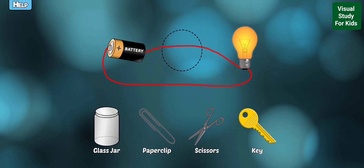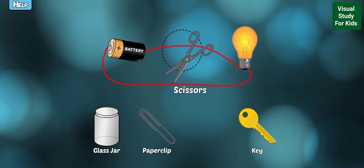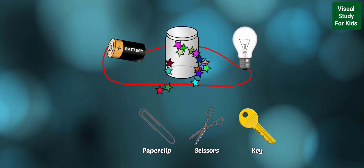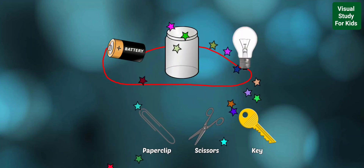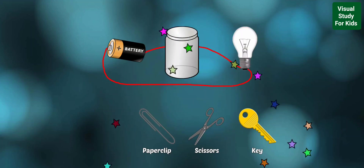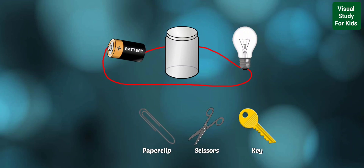Drag the object that is an insulator so the light bulb stays off. Right! That object is an insulator because it will impede the flow of electricity, which turns off the light.